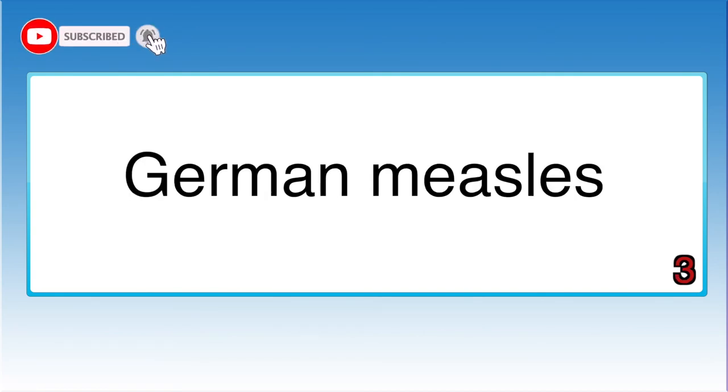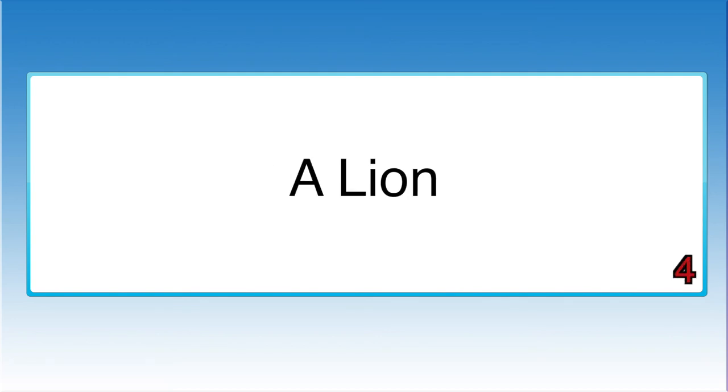What is the more familiar name for the disease rubella? German measles. A sphinx has a body of what animal? A lion. Which animals live in lodges and are known for gnawing trees? Beavers.